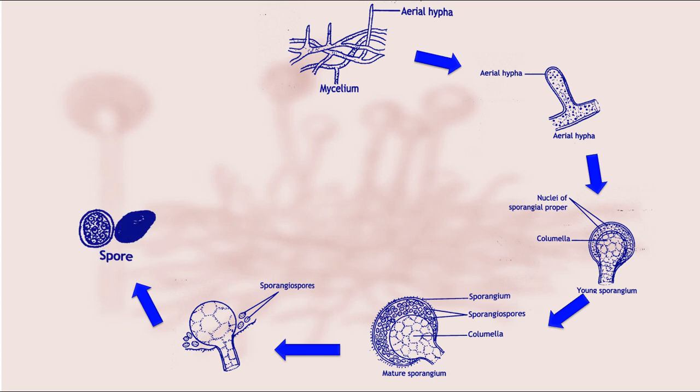When a spore falls on suitable medium, it germinates and grows as new mycelium. In this way Mucor reproduces asexually during favorable conditions by producing sporangiospores.